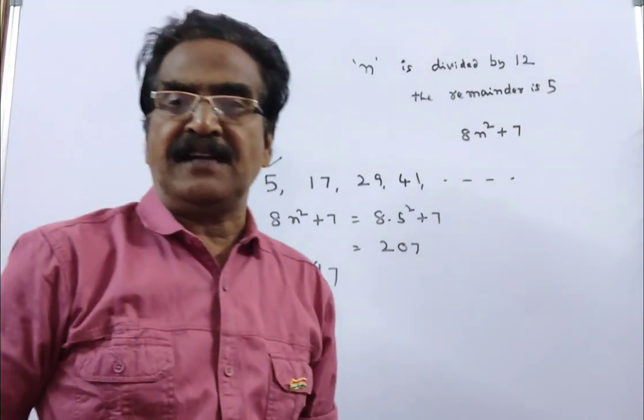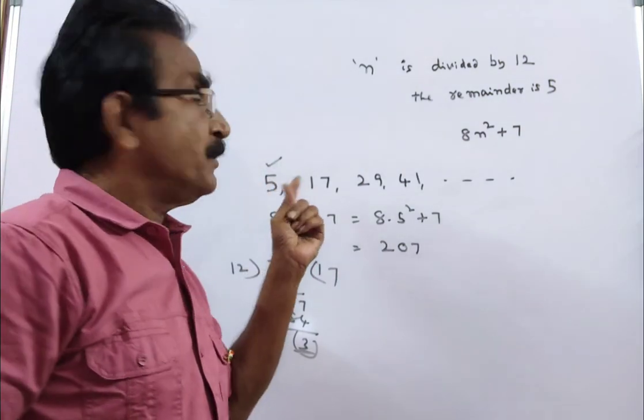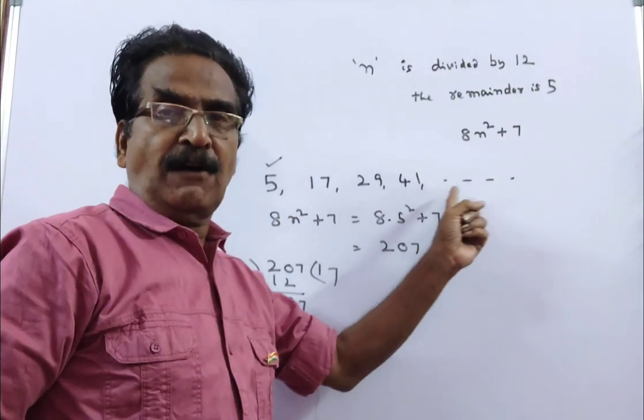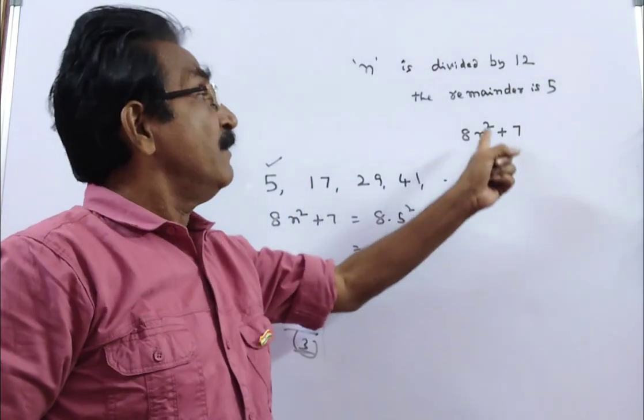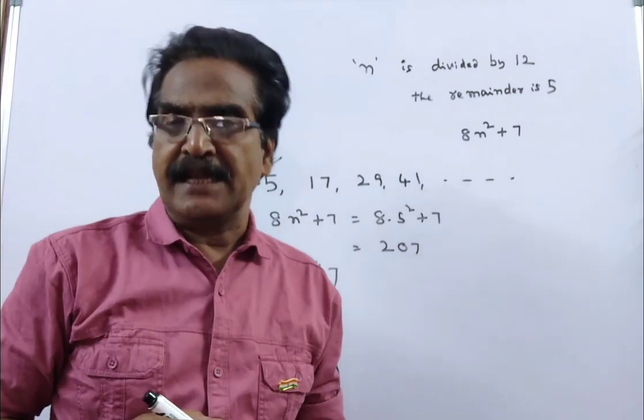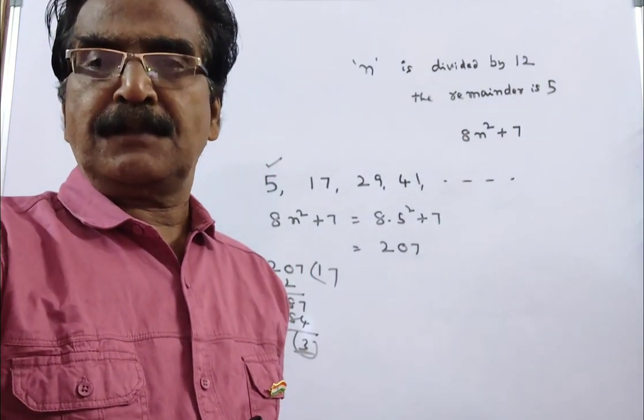So your answer is 3. Not only 5, you can take any value of this set for n and you get the same remainder 3. Okay friends, thank you, have a nice day.